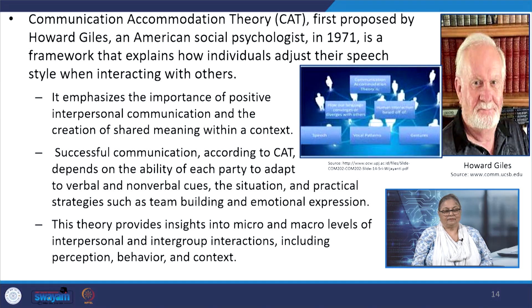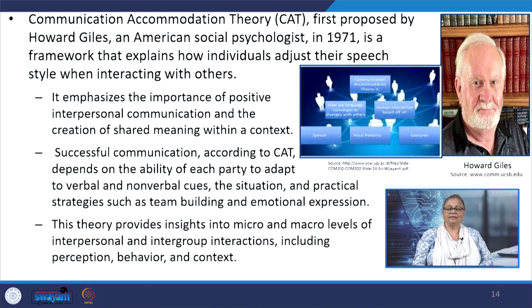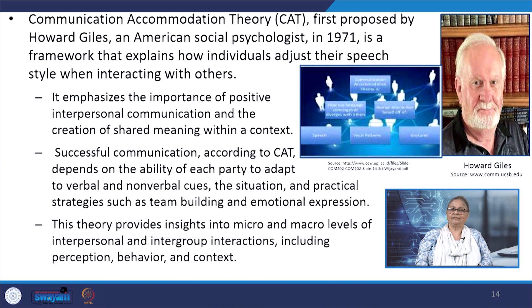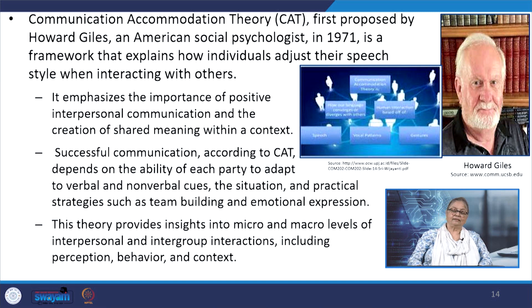Communication Accommodation Theory, or CAT, was first proposed by Howard Giles, an American social psychologist, in 1971. It is a framework that explains how individuals adjust their speech style while interacting with others. It emphasizes the importance of positive interpersonal communication and the creation of shared meaning within a context. Successful communication, according to this theory, depends on the ability of each party to adapt to verbal as well as non-verbal cues, the situation, and practical strategies such as team building and emotional expressions. This theory also provides insights into micro and macro levels of interpersonal and intergroup interactions including perception, behaviour and context.